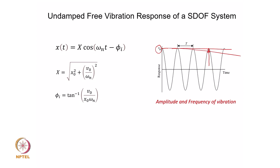The amplitude is a function of the initial conditions. The frequency, which is the inverse of the time period, is expressed in cycles per second: f = 1/T. In practice, this is a common unit of vibration frequency — cycles per second or Hertz — that is 1 over the time period of oscillation.